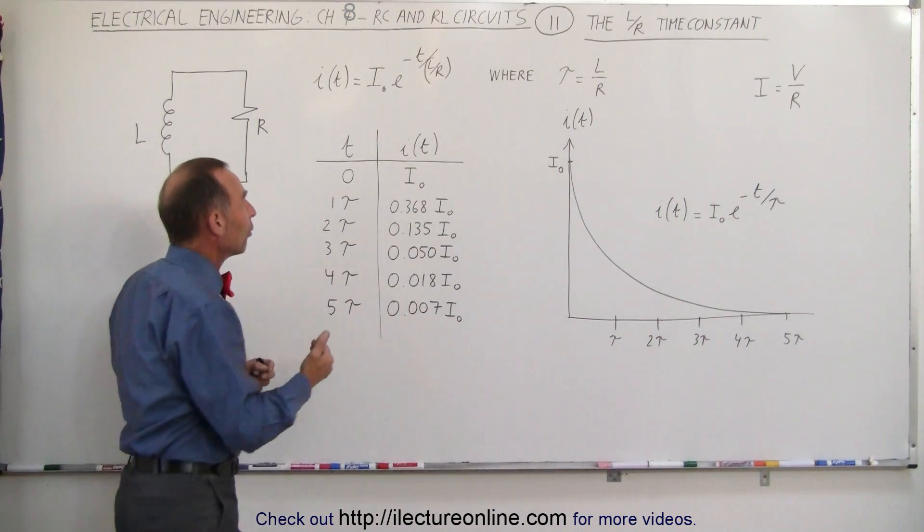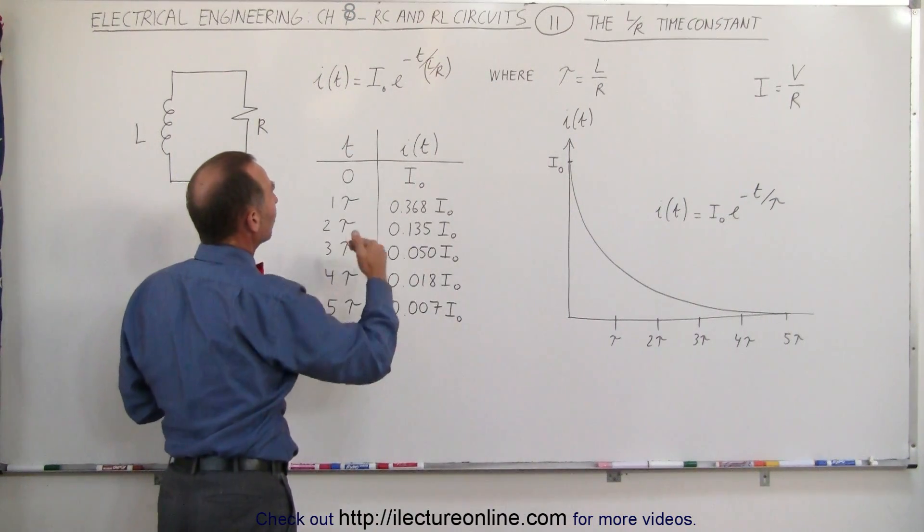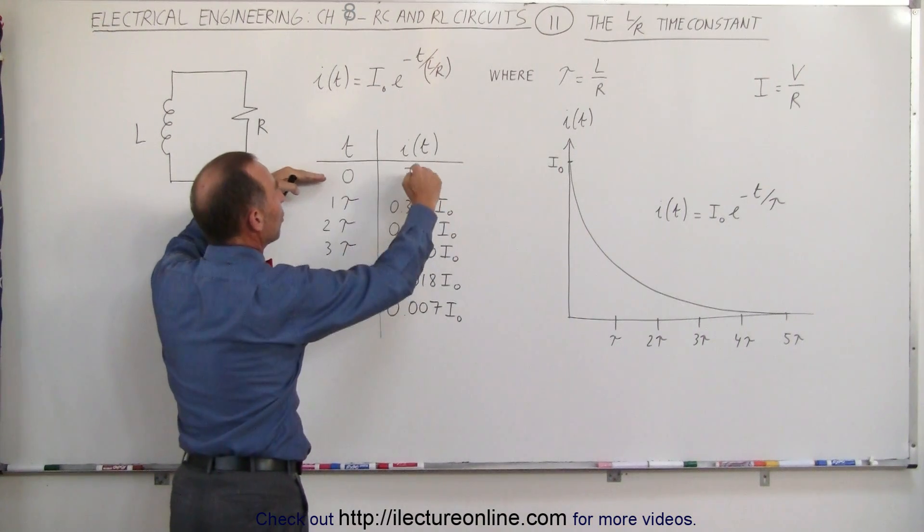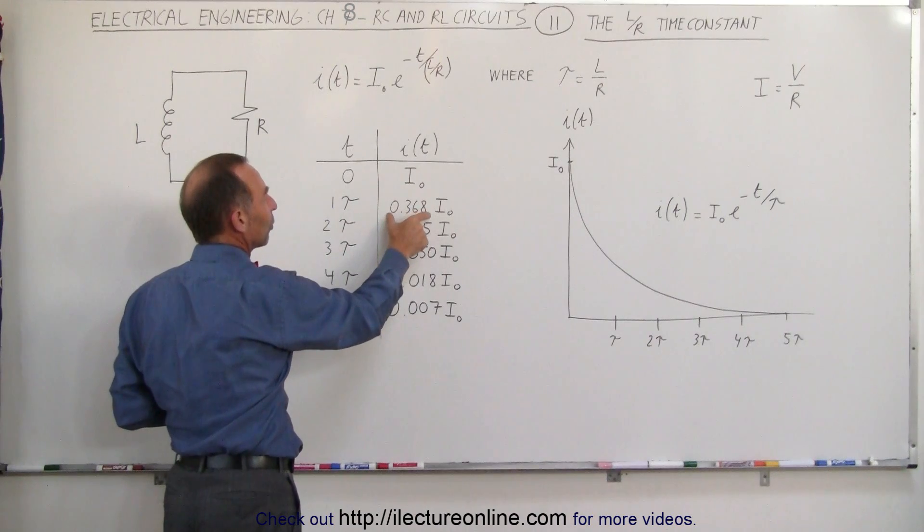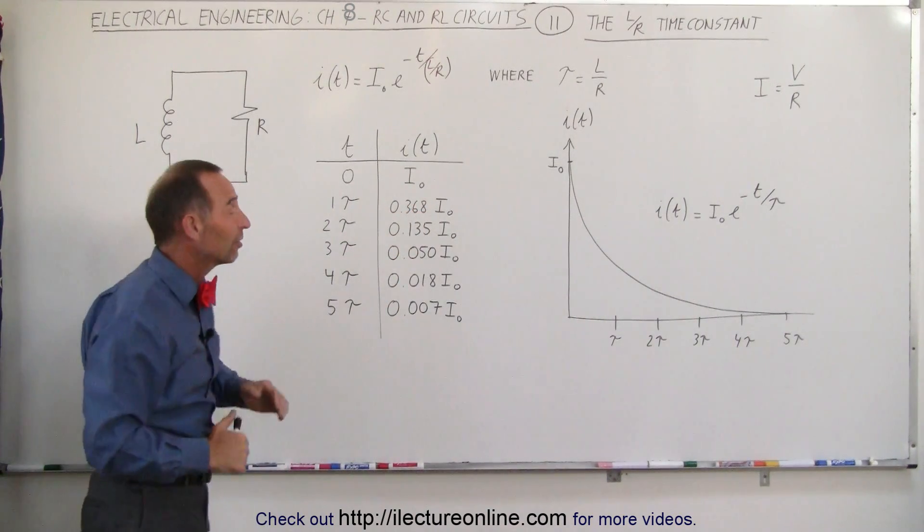And just like before, because it's the same exponential function, we can see that at time equals zero, we have the initial current. After one time constant, the current went down to 36.8% of its initial value. After two time constants, it's only 13.5% of its initial value.